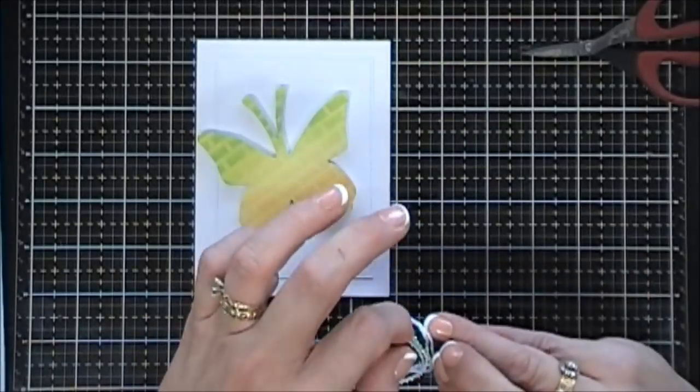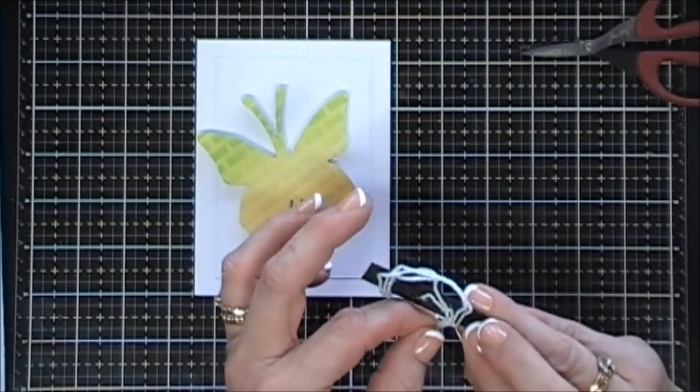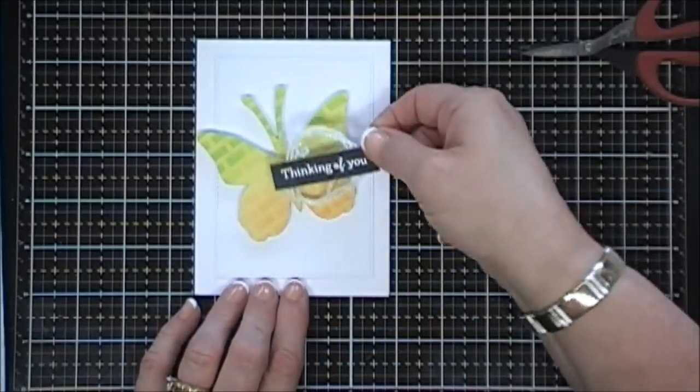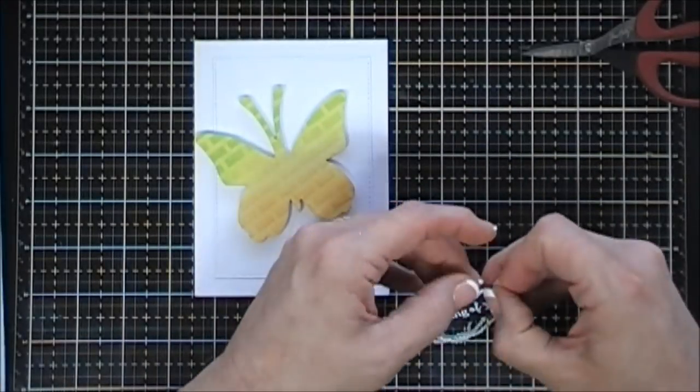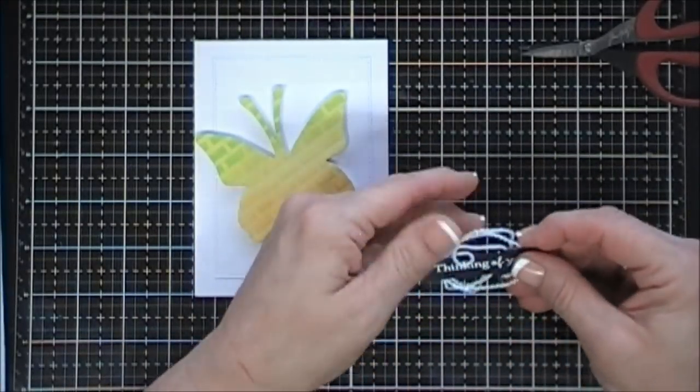The ends do fray, so I just tuck them behind my sentiment. Now I'm going to add a piece of foam tape behind this. I just looped them around my hand and then looped them around my sentiment, but popped it up and placed it on my butterfly there.